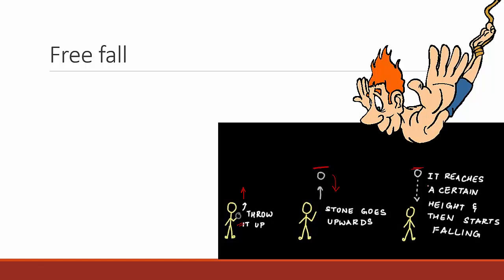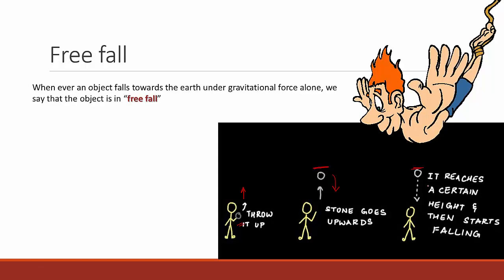Let's define freefall. Whenever an object falls towards the earth under gravitational force alone, we say that the object is in freefall. If an object falls back to earth only because of gravitational force — without being pulled or pushed by any other source — we call it freefall because it is naturally coming back down due to gravitational force.